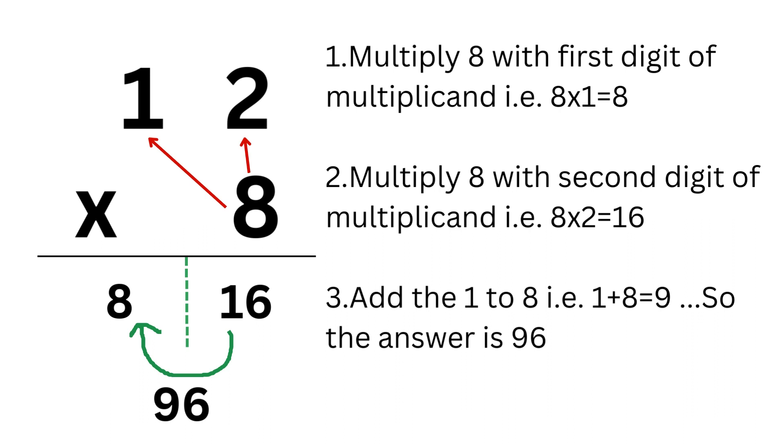Step 2: Multiply the multiplier with the second digit of the multiplicand, that is 8×2 which gives us 16. This is the second part of the answer.